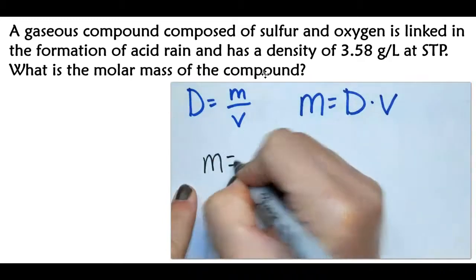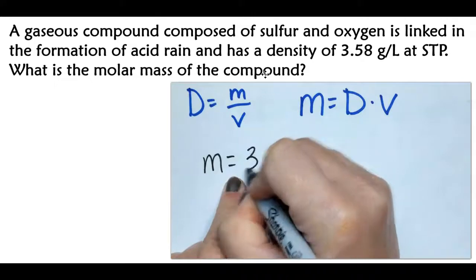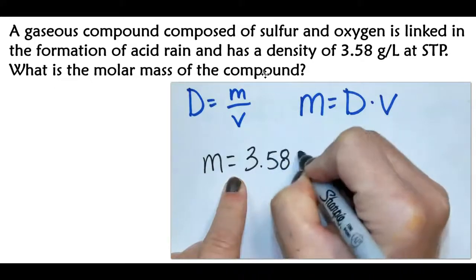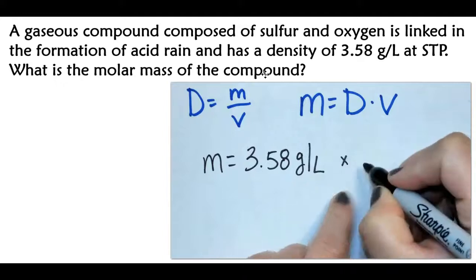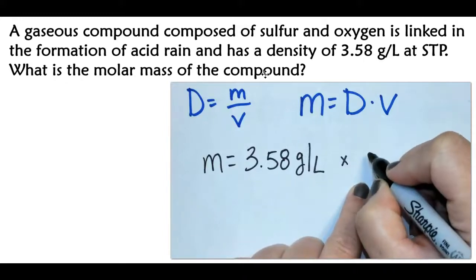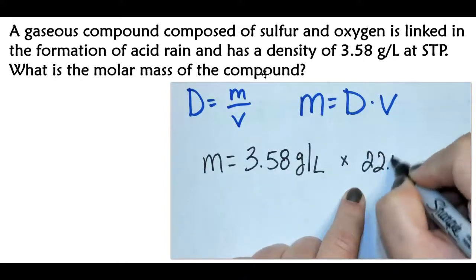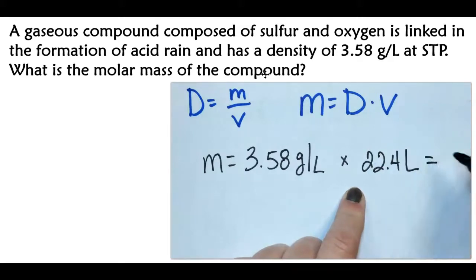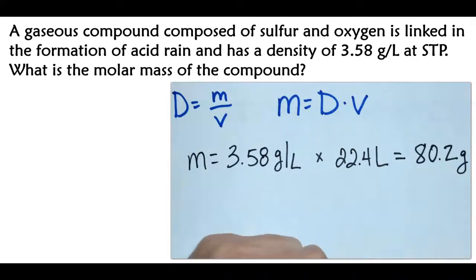So we can take the mass, put in the given density, 3.58 grams per liter, times the molar volume at STP, which is 22.4 liters, and then we get 80.2 grams.